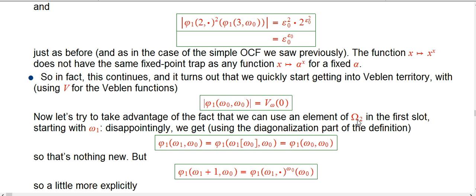The simplest element of omega-2 is little omega-1. A little bit of a disappointment here — if we put in omega-1, this is the first time we've actually been able to use diagonalization. By definition, little omega-1 is a function on big omega-1, so we can put omega naught in this slot and in this slot and diagonalize. But little omega-1 is the identity function, and we just get what we were just looking at: phi-1 of omega-naught, omega-naught. So that's not really anything new — we're still at the Veblen omega level.